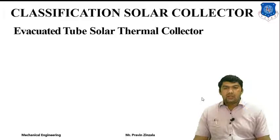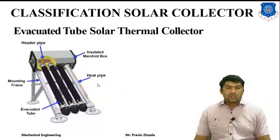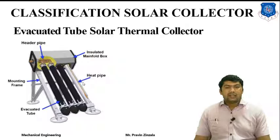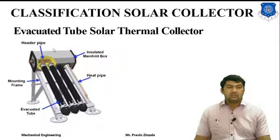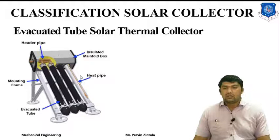Next is the evacuated tube solar thermal collector. Two tubes are used for water heating — one outer tube and one inner tube. The function of the outer tube is to protect the inner tube and maintain a vacuum between the inner and outer tube for maximum utilization of thermal energy. Whenever solar radiation strikes the outer tube, it is transmitted and absorbed by the inner tube, which then transmits the energy to a storage tank. The storage tank is an insulated storage tank to minimize energy losses.